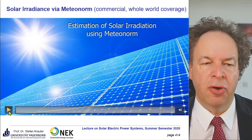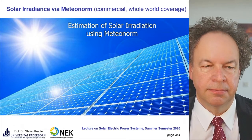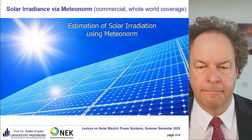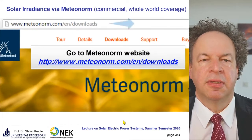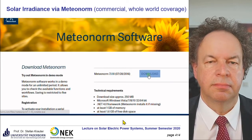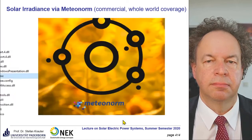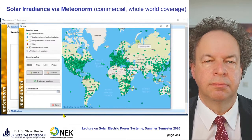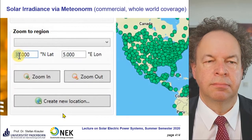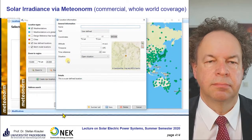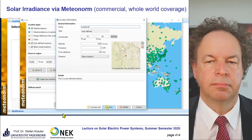Let's see how the MeteorNorm software works. Go to the MeteorNorm website, click the download button, and install the software. After installation, if you don't have a license, continue in demo mode. The first step is to select a particular location — you can search for the location or use the map tool. We will use the map and enter a latitude of 15 degrees and longitude of 45 degrees, then click 'Create New Location' and name it 'Location 1', then save and close the map tool window.